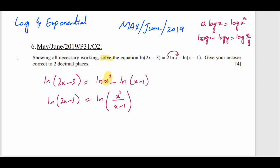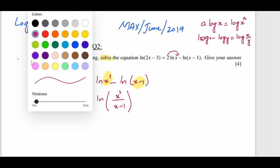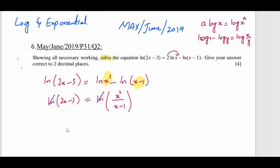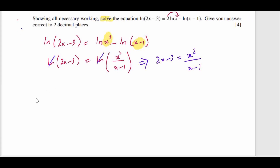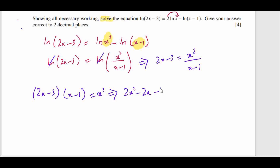Here (2x − 3) is the first function and (x − 1) is the second function. Since the logs on both sides match, we can cancel them out, giving: 2x − 3 = x² / (x − 1). Cross-multiplying: (2x − 3)(x − 1) = x². Expanding: 2x² − 2x − 3x + 3 = x².